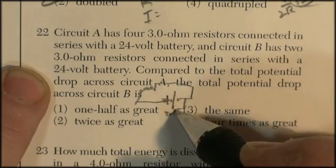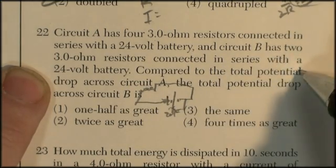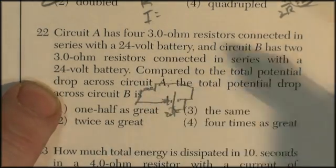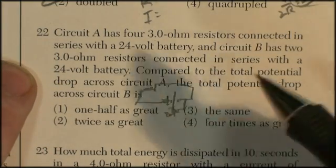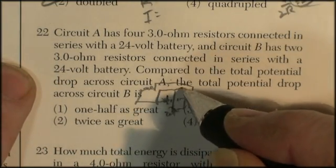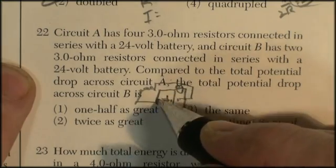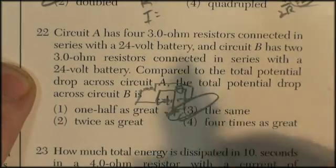Circuit B has two 3-ohm resistors connected in series with a 24-volt battery. So if there's two of these resistors, compared to the total potential drop across circuit A, the total potential drop across circuit B, well, we don't care about the circuit. We're going right across the battery. It's 24 volts for both of them. I'm having to go over the same.